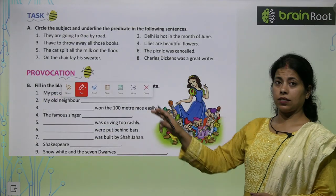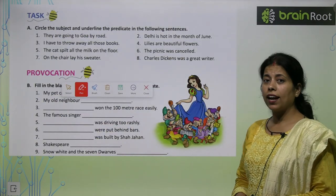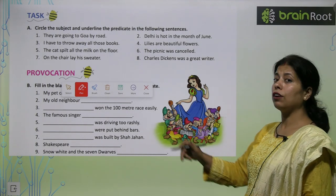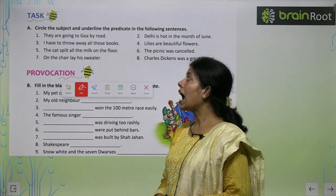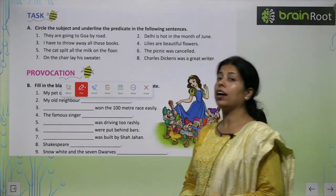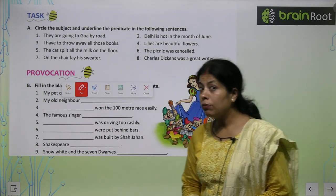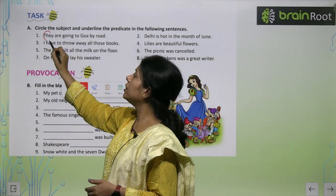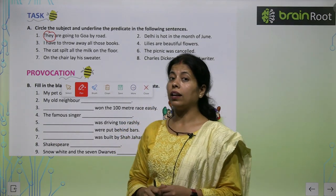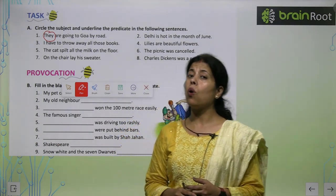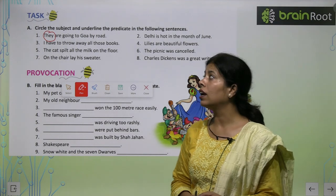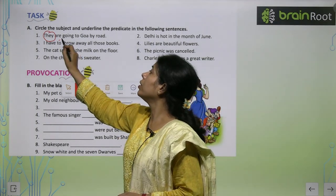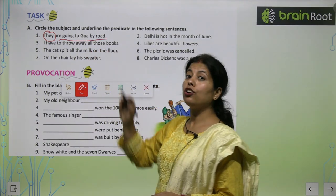Task: Circle the subject and underline the predicate in the following sentences. The first one: They are going to Goa by road. Kiske baare mein baat ho rahi hai? They. So I will circle 'They' here. Unke baare mein baat ho rahi hai ki woh Goa ja rahe hai road se. To kya kar rahe hai? Are going to Goa by road — that is the predicate.